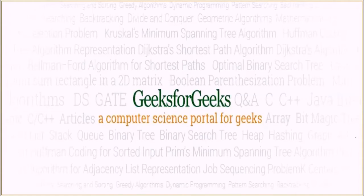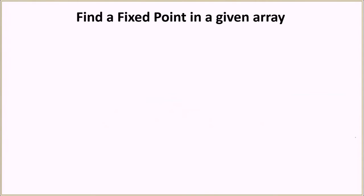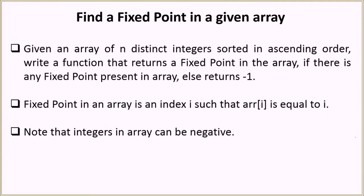Hello everyone and welcome to GeeksForGeeks. The problem we are going to see today is to find a fixed point in a given array. The problem statement is that you will be given an array of n distinct integers sorted in ascending order, and you have to write a function that returns a fixed point in the array if there is any, otherwise it should return minus one.